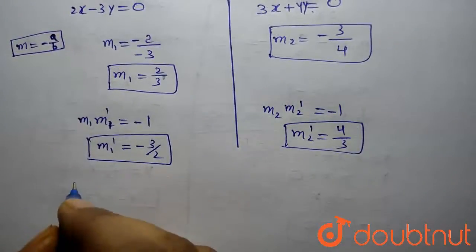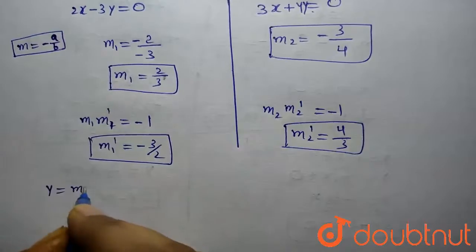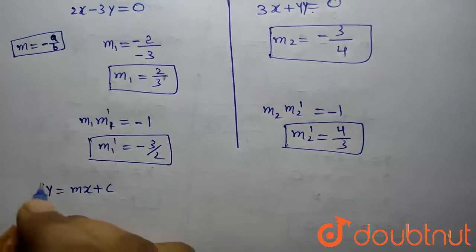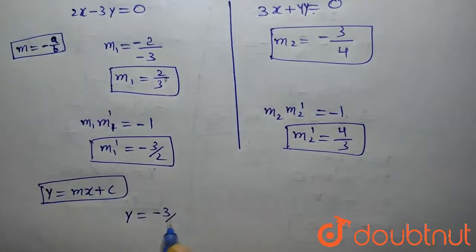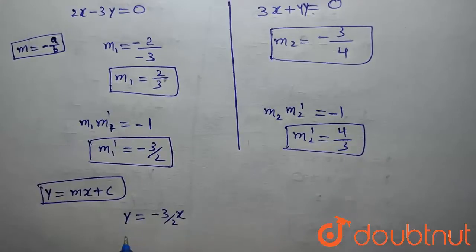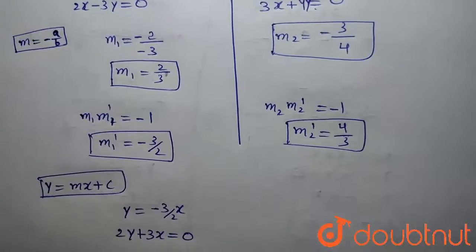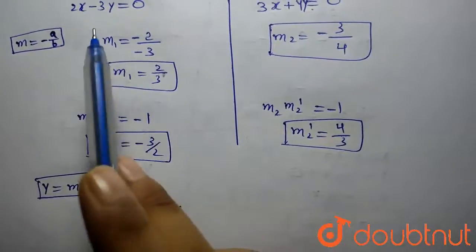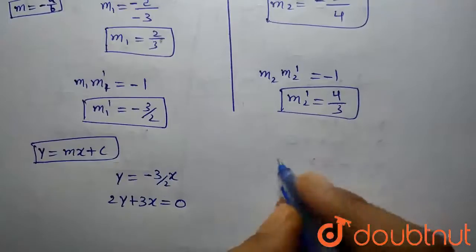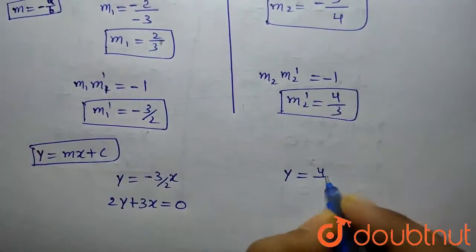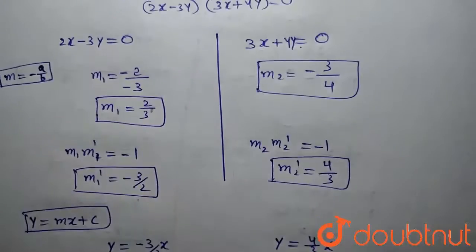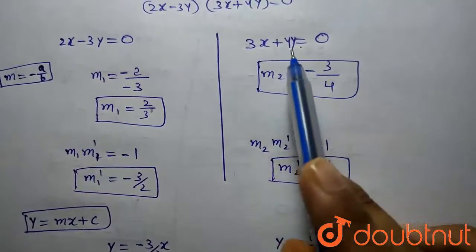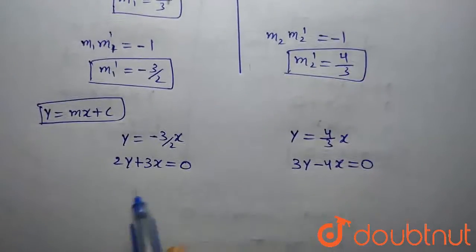Using the equation of a line y equals mx plus c, with c equal to 0 since lines pass through the origin: for slope minus 3/2, we get y equals minus 3/2 times x, so 2y plus 3x equals 0, which is perpendicular to 2x minus 3y equals 0. For slope 4/3, y equals 4/3 times x gives 3y minus 4x equals 0, perpendicular to 3x plus 4y equals 0.